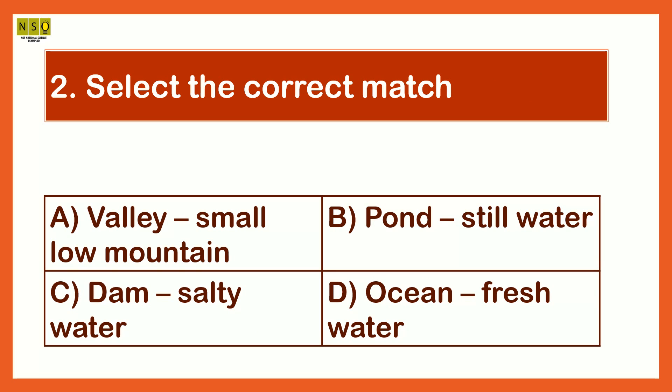Select the correct match. The options are: Option A, Valley - small low mountain. Option B, Pond - still water. Option C, Dam - salty water. Option D, Ocean - fresh water. The correct match is Pond, still water.